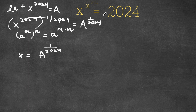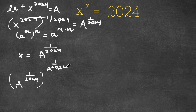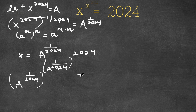So now going back to our equation, we have x to the power of x to the power of 2024 is equal to 2024. If I plug in a to the power of 1 over 2024 for x, I get a to the power of 1 over 2024, to the power of 2024 — so x to the power of 2024 — and this is equal to 2024.